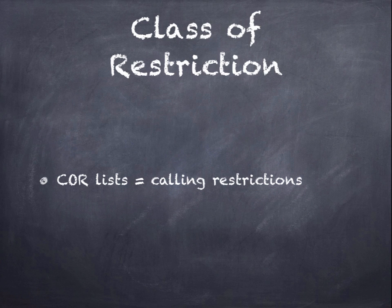COR lists — class of restriction — are simple calling restriction lists used to prevent people from dialing 900 numbers, international numbers, or even getting an outside line in some cases.